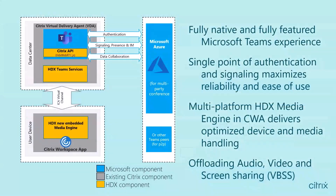Let's look at the architecture and what Teams optimization looks like behind the scenes. At the top of the diagram, we have our VDA within either our data center or public cloud tenant. Below that is our user device running the Citrix Workspace app. After the user launches Teams, Teams authenticates to Office 365 and tenant policies are pushed down to the Teams client, and the relevant TURN and signaling channel info is relayed. Teams detects it is running in a VDA and makes API calls to the Citrix code embedded in Teams.